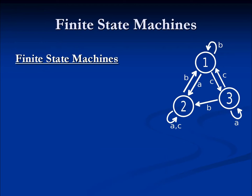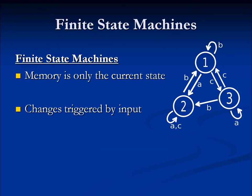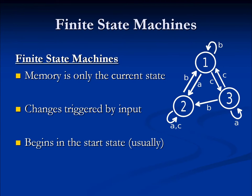The beauty of a finite state machine is that they're fairly simple. Everything is currently in memory and you get one unique state. Those changes are triggered by those inputs that come in and are filtered, and each state begins anew. So you go in, one state runs, and then it transitions to a next state.